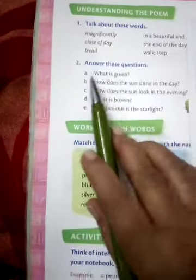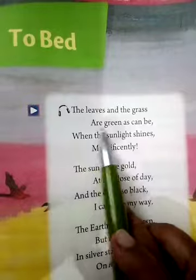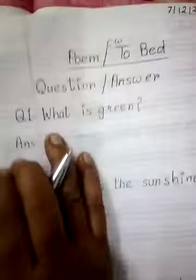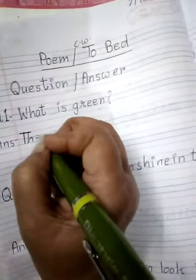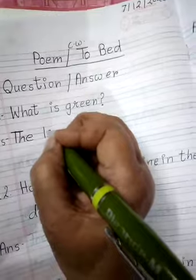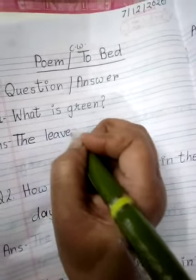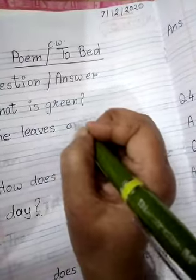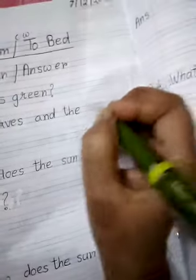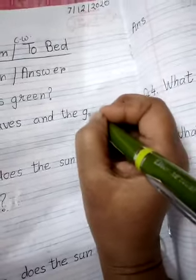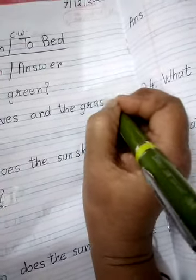First question is: what is green? Now look at the poem — I hope you are reading it. The leaves and the grass are green. So the answer is: the leaves and the grass are green.